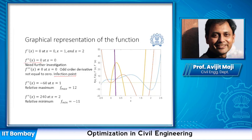At x = 1, the second order derivative is non-zero and equals -60. Since it is negative and the order is even, x = 1 is a relative maximum, where the function value is 12. At x = 2, the second order derivative is non-zero and equals +240. Since it is positive and even order, x = 2 is a relative minimum, where the function value is -11.